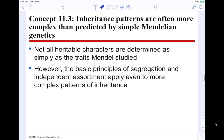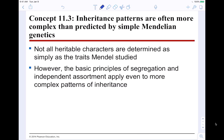Inheritance patterns are often more complex than predicted by simple Mendelian genetics. Not all heritable characters are determined as simply as the traits in Mendelian studies. This is very simplified genetics — typically it's much more complicated. However, the basic principles of segregation and independent assortment apply even to more complex problems of inheritance.